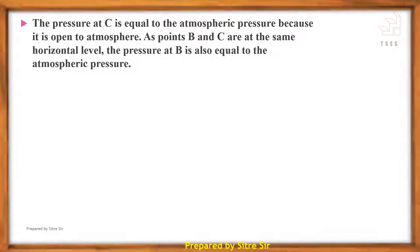In the diagram, the pressure at point C is equal to atmospheric pressure because it is open to the atmosphere. Since points B and C are at the same horizontal level, the pressure at B is also equal to atmospheric pressure.